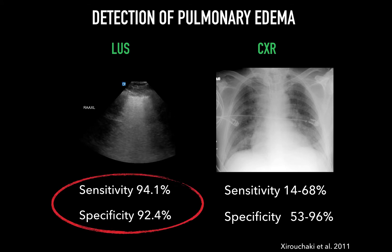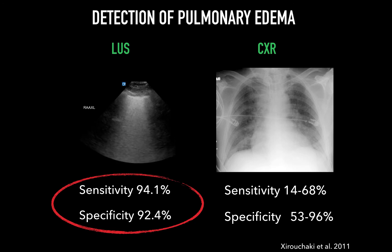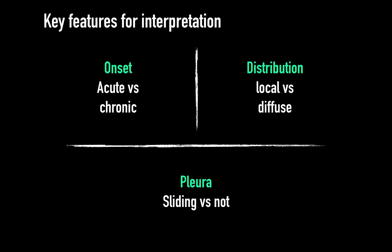In fact, a recent systematic review in JAMA revealed that in 100 patients with acute pulmonary edema, lung ultrasound will diagnose 15 more than chest X-ray will. Many nuances go into interpretation of lung ultrasound, and these are three key ones: is the onset acute or chronic, which is partly based on clinical history but also sequential exams? Is the distribution local or diffuse, which requires a full exam?